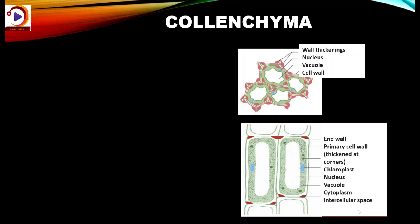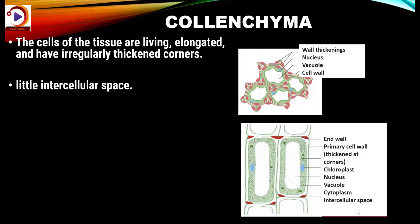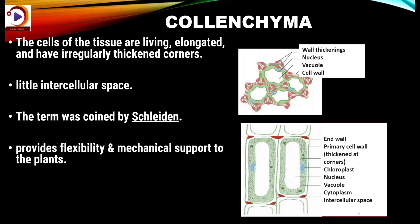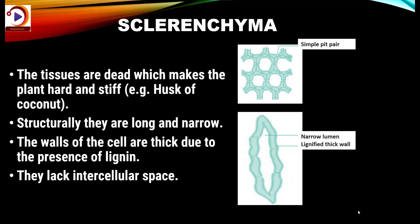Next we have colenchyma. The cells of this tissue are living, elongated, and have irregularly thickened corners. The term was coined by Schleiden. Colenchyma provides flexibility and mechanical support to plants. It has very little intercellular space and allows easy bending of plants without breaking — that is, it provides flexibility. You may have observed plants bending in the wind — this is due to colenchyma.